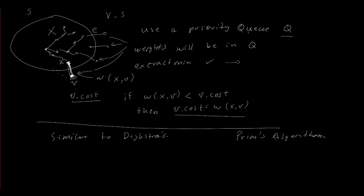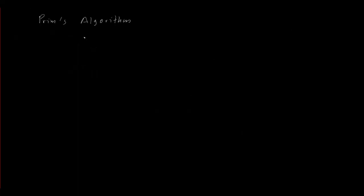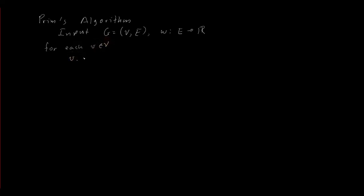For Prim's algorithm, the input is a graph with vertices and edges, and a weight function from edges to real numbers. Similar to Dijkstra's algorithm, we start by assigning all weights for each vertex: V.Cost is set equal to infinity, and V.previous is set equal to null.